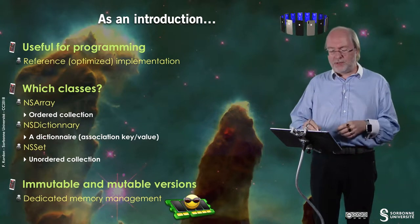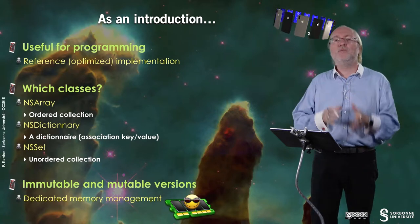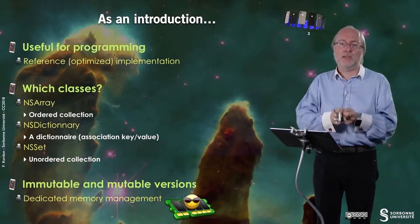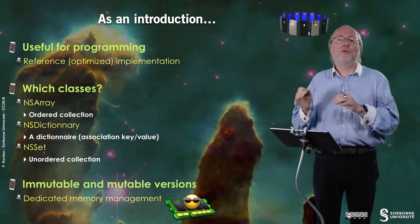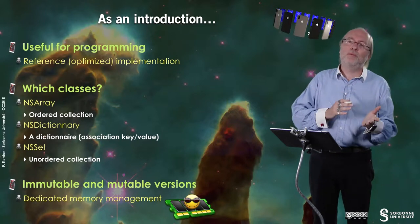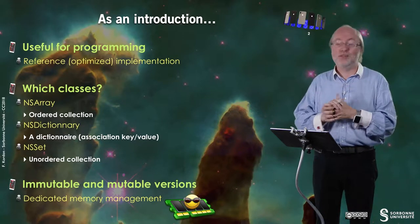And you will discover that for each of these classes you have two variants: an immutable variant, so it means that once you have created the array, the NSDictionary, the NSSet, you cannot change it anymore. Or a mutable version, where you can change it afterwards, all over the execution of your program. And of course, you will have different memory management for the two. In fact, the mutable version will be slower than the immutable version. Okay? But everything is hidden, even with regard to the reference counting.